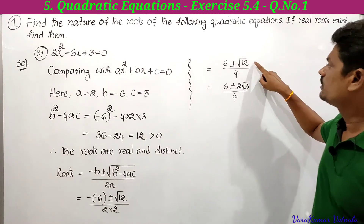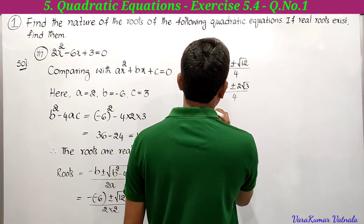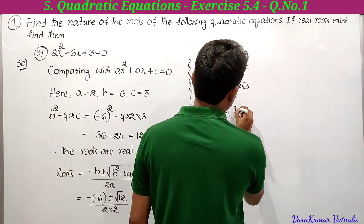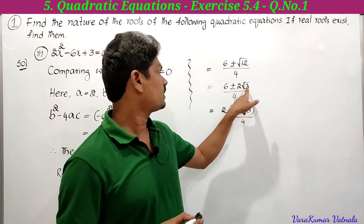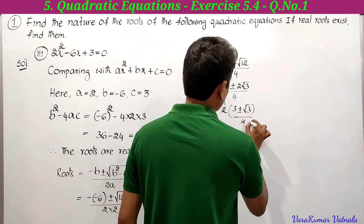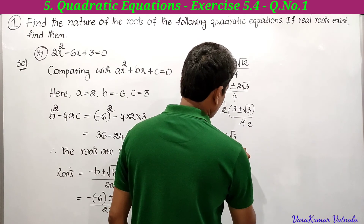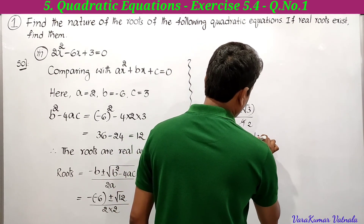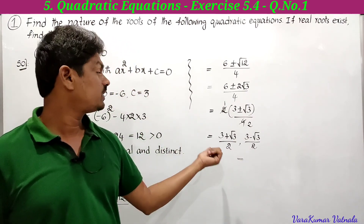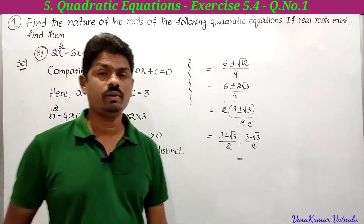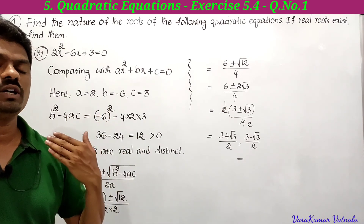Therefore the two roots are (3 + √3)/2 and (3 - √3)/2. This completes the third part of the first problem. We have now solved all three parts. That's all for today's class — we will meet in the next class with another problem. Thanks for watching!